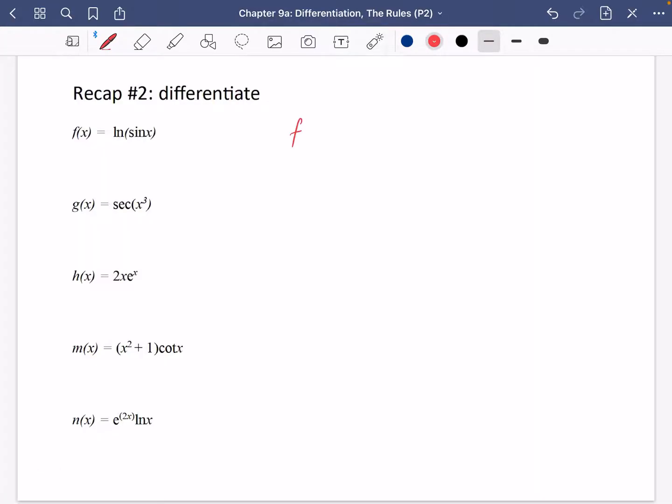Okay, so we've got another ln which means it's going to go to something over sin x. And we know that sin x differentiates to cos x. So you have cos x over sin x which is cot x. So we now know that the integral of cot x would be ln sin x.